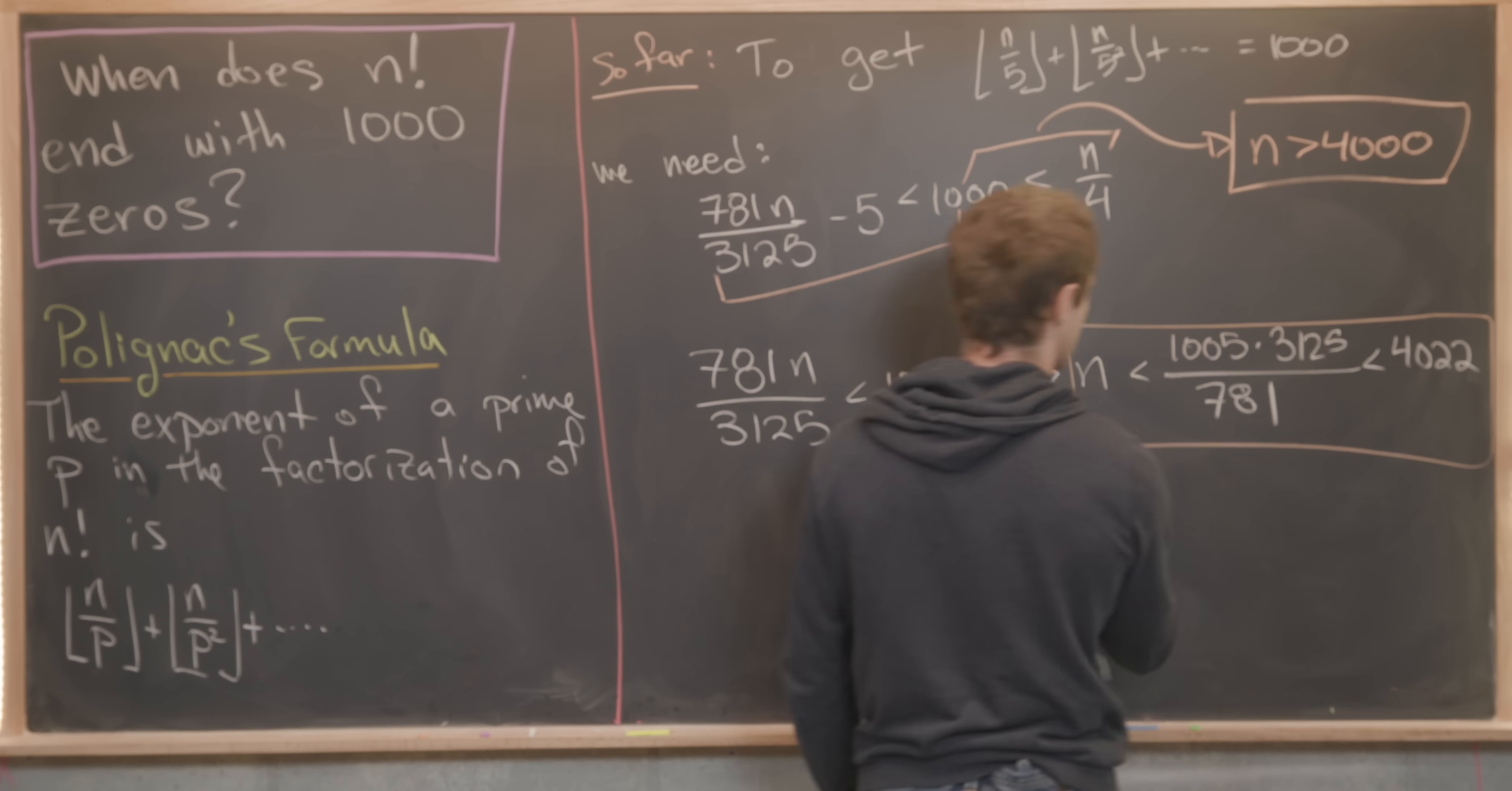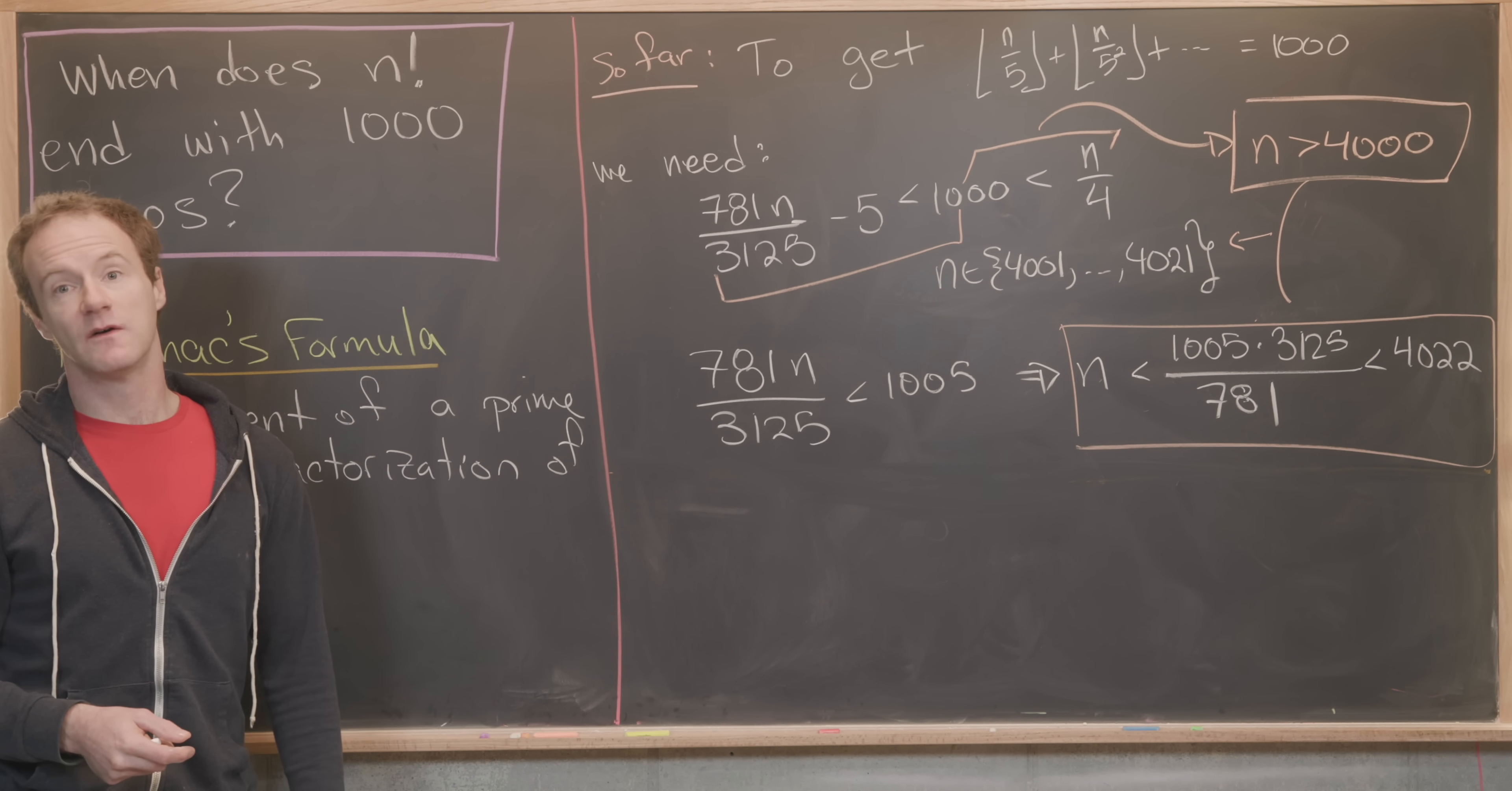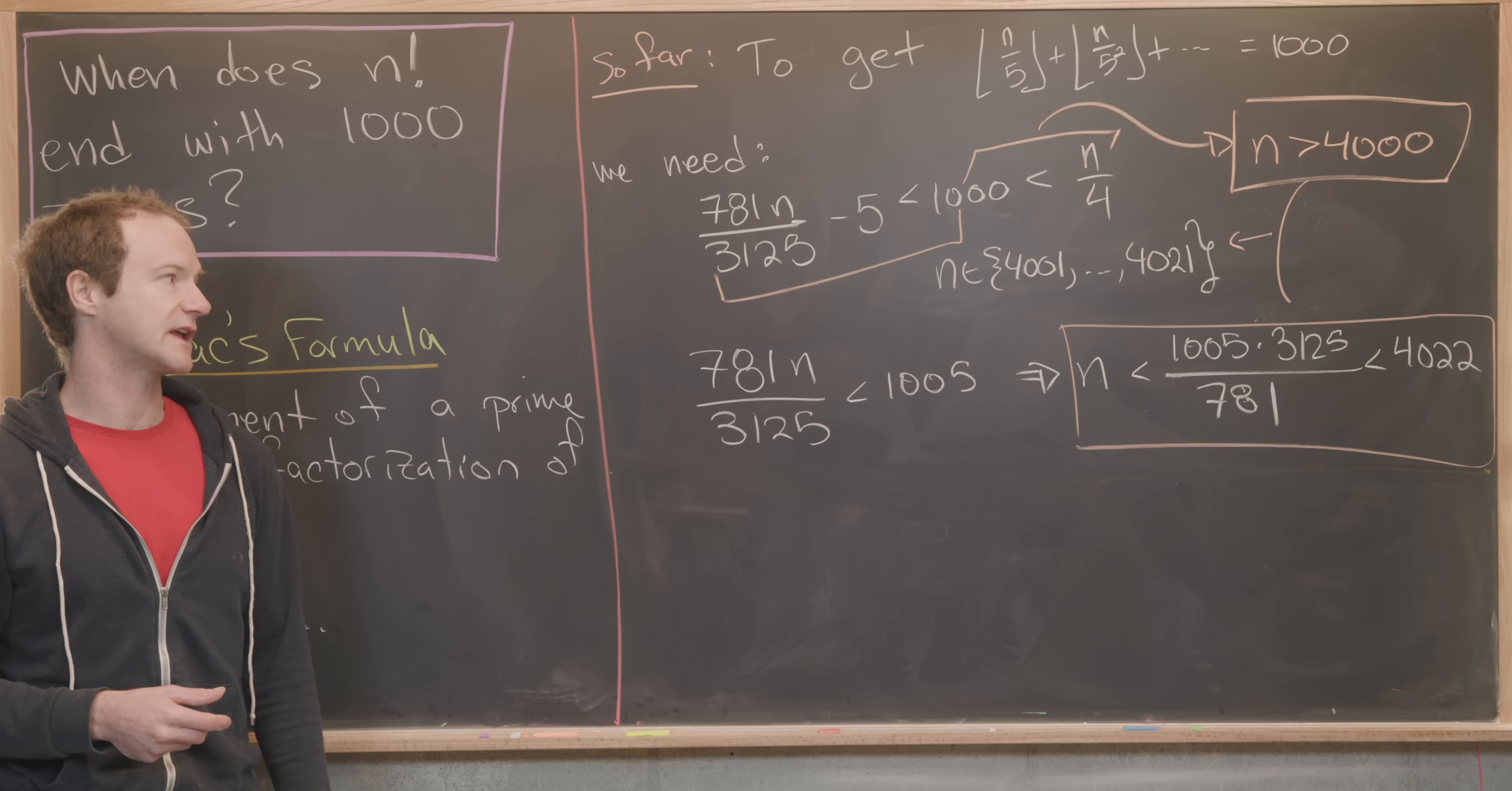Putting this inequality and this inequality together, we see that n is on the set from 4001 all the way up to 4021. It has to be bigger than 4000, so that means it at least can be 4001, and it has to be less than 4022, so the biggest it can be is 4021. In fact, it cannot be all of those values, and we don't have to check all of them. We only have to check a couple of careful cases.